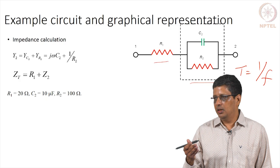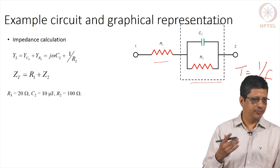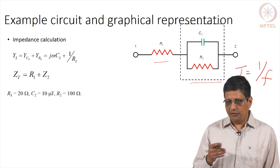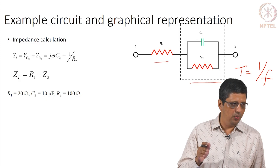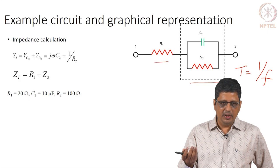In electrical impedance spectra, people normally work with 100 hertz to 1 kilohertz and go up to megahertz and gigahertz. In EIS we normally go to lower and lower frequencies because a lot of information is present only at low frequencies. So we want to go as low as possible within the time constraint. High means at least 10 to 100 kilohertz in that range; low means at least 1 hertz or lower than 1 hertz.